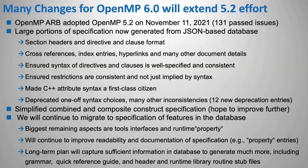We're also looking at doing things to continue improving the readability of the specification. We added a number of properties for directives and clauses in 5.2, and as we were finishing that up we realized we could turn those into database entries and have them much more clearly and consistently specified. How much of this work will get done in 6.0 is not really clear, but we're going to be continuing it in 6.0, 6.1, and on into the future. Eventually we'll be able to generate the grammar from the database, generate header files, quick reference guides, and all the various things that provide other ways of looking at the OpenMP specification besides the specification document itself.